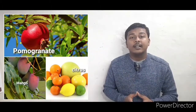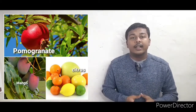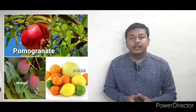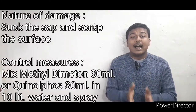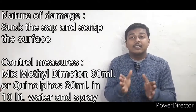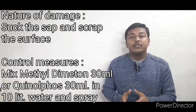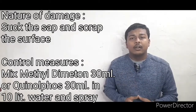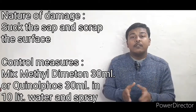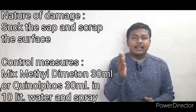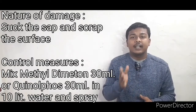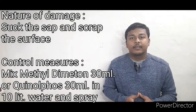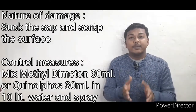The next pest is the thrips. The affected crop plants are mango, pomegranate, and citrus fruits. They suck the sap and scrape the surface. To control this, mix methyl demeton at 30 ml, or quinalphos at 30 ml in 10 liters of water and spray.